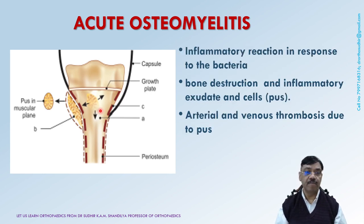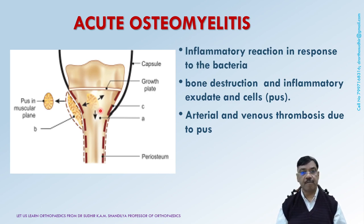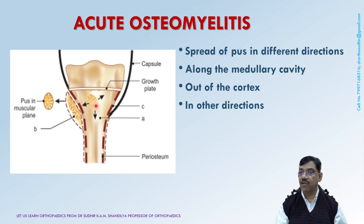The pathology begins as the host bone initiates an inflammatory reaction in response to the bacteria. This leads to bone destruction and production of inflammatory exudate and cells — we call it pus. Once sufficient pus forms in the medullary cavity, it spreads in various directions. The first direction is always the medullary cavity itself. The pus trickles along the medullary cavity and causes thrombosis of the venous and arterial medullary vessels.